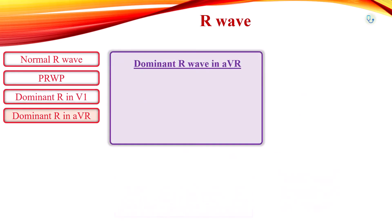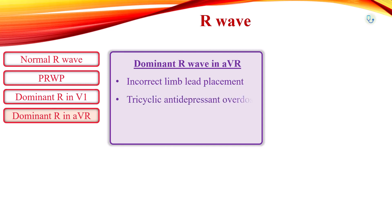Since all depolarizations are going away from lead AVR, all waves are normally negative in AVR during normal sinus rhythm. The most common cause of a dominant R-wave in AVR is incorrect limb lead placement. Tall R-wave in AVR is also used to identify tricyclic antidepressant overdose, and is seen in dextrocardia and ventricular tachycardia.